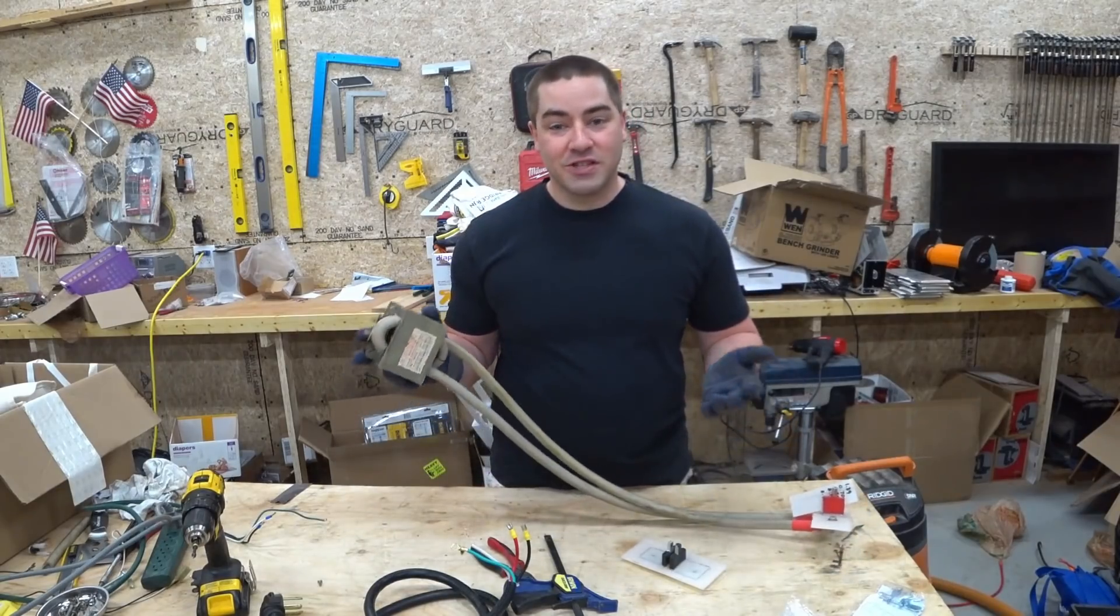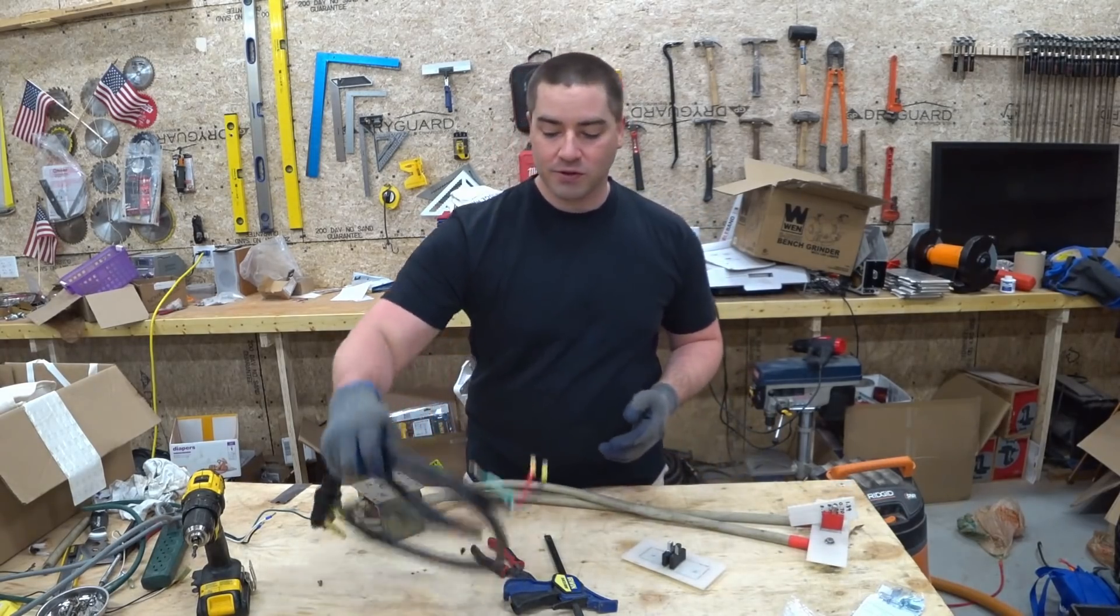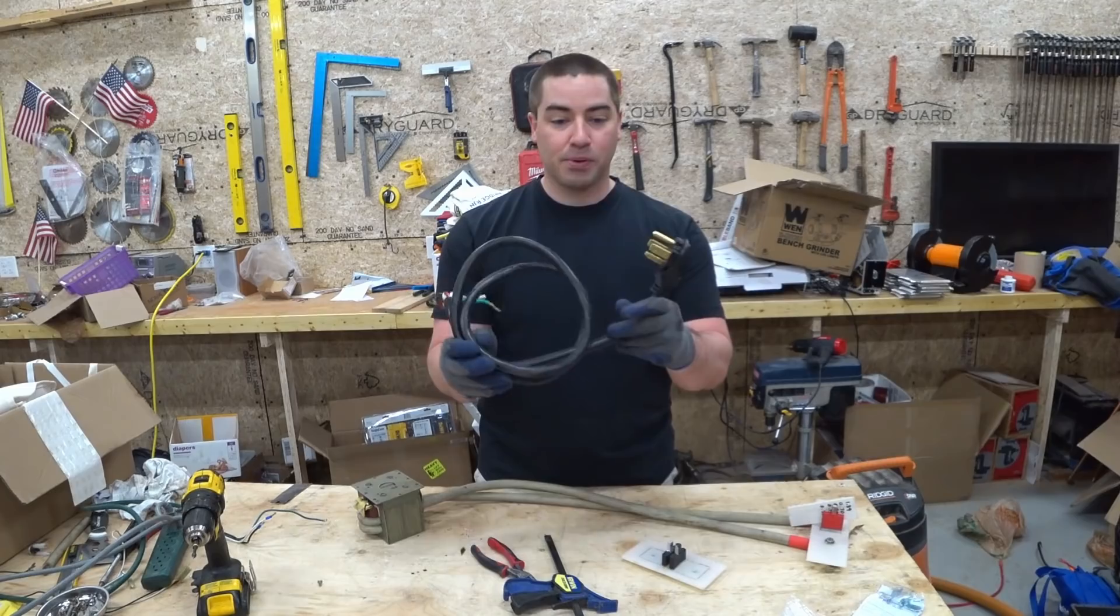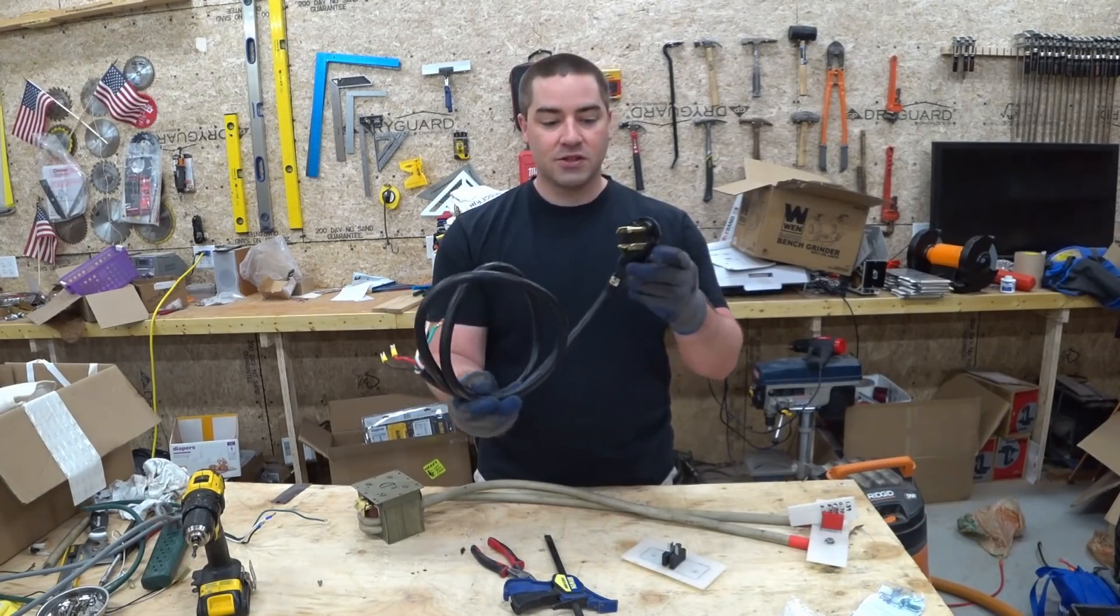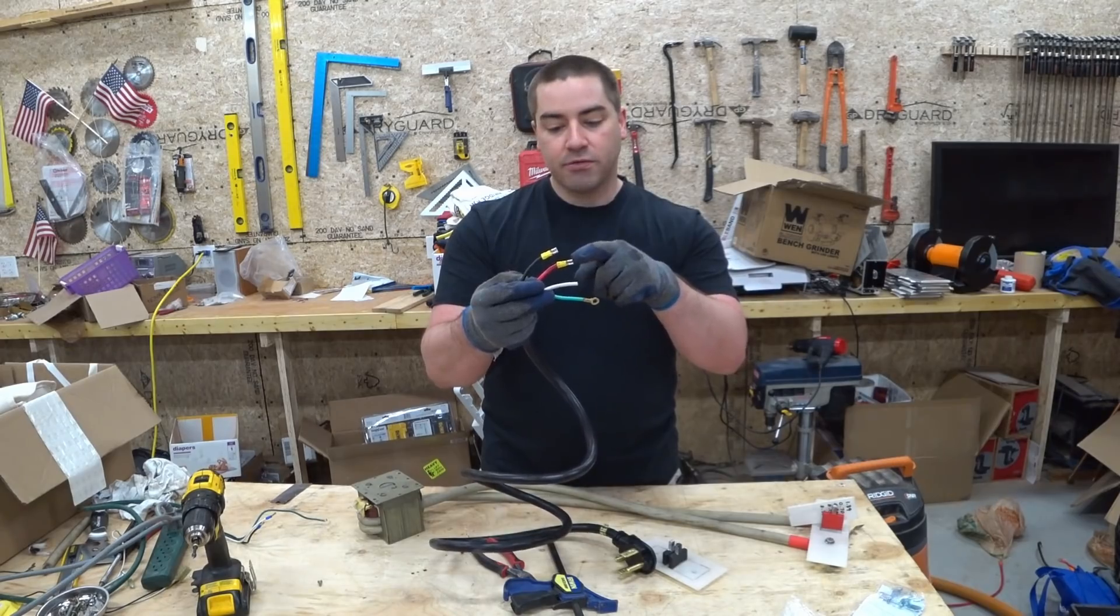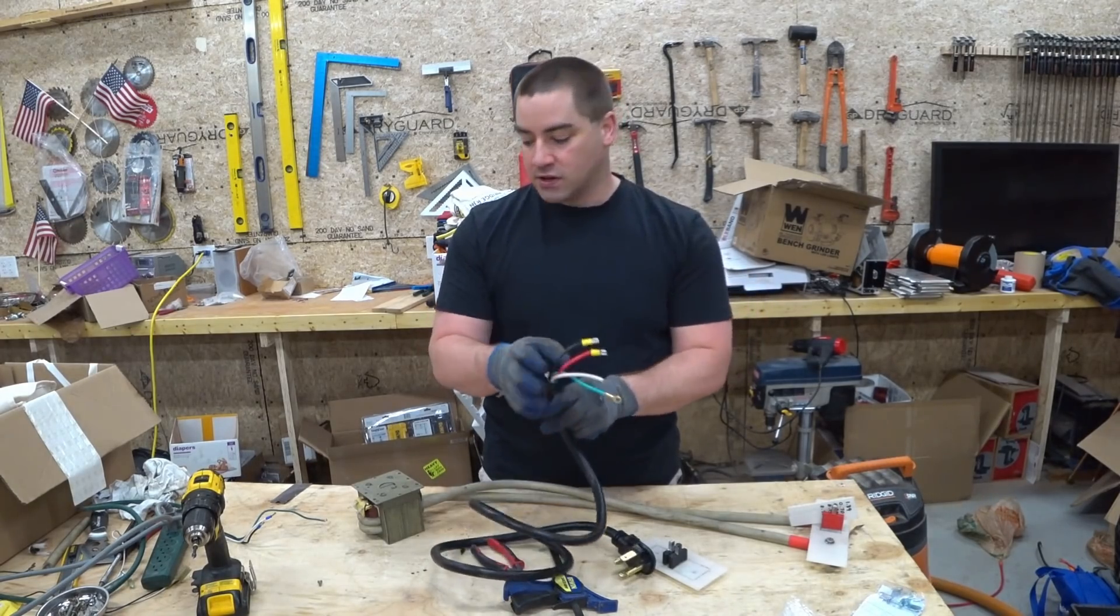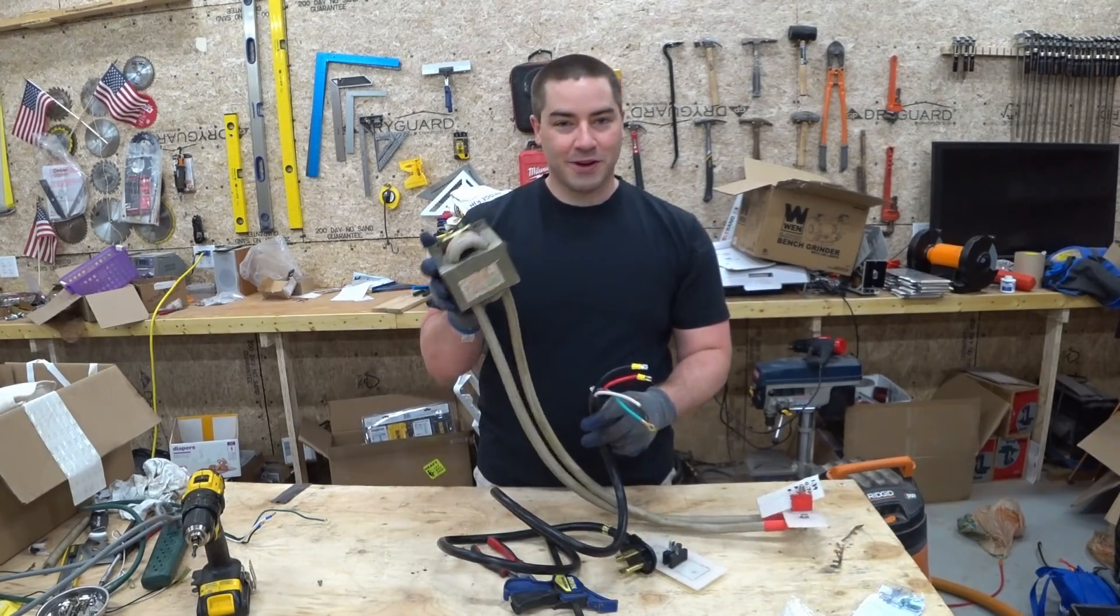Another common suggestion you guys had for increasing the performance of this was to use 240 volts. So I went ahead and got this appliance cord. And this is 240 volts. It has four prongs. So I replaced the ring terminals on the two hot legs with spade connectors. So it will connect right up to the transformer.